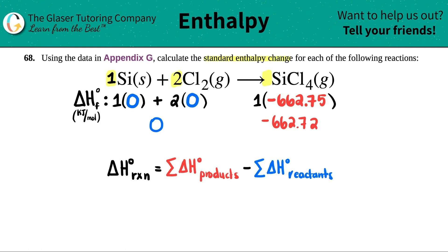Now I'm ready to plug in my numbers. So the delta H for the whole reaction would be the sum of the products, which is negative 662.72, and I would minus zero. So it would just be that number.